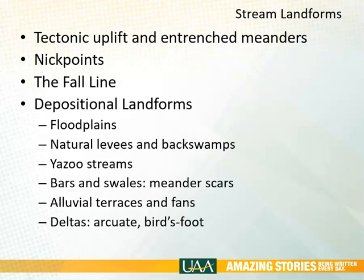You also get bars, swales, and meander scars, as seen in previous diagrams. Other features include alluvial terraces — areas built up by old meanders that eventually get cut down into by newer streams. Rivers also form deltas where they finally reach their destination and base level, hitting still water and immediately losing large amounts of their load. Deltas can look different depending on location: sometimes they form beautiful arc-shaped deltas, but sometimes they form small deltas that stick out in the water called bird's foot deltas.